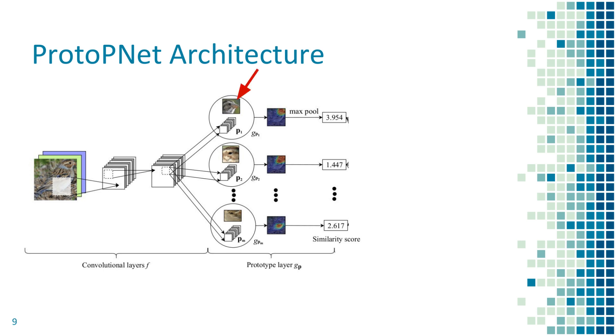For example, the top prototype here corresponds to the head of a clay-colored sparrow. Given the new input image on the left, our model recognizes the upper-right patch of the input image, which is the head of the bird, to be very similar to this sparrow head prototype, which has a similarity score of 3.95.